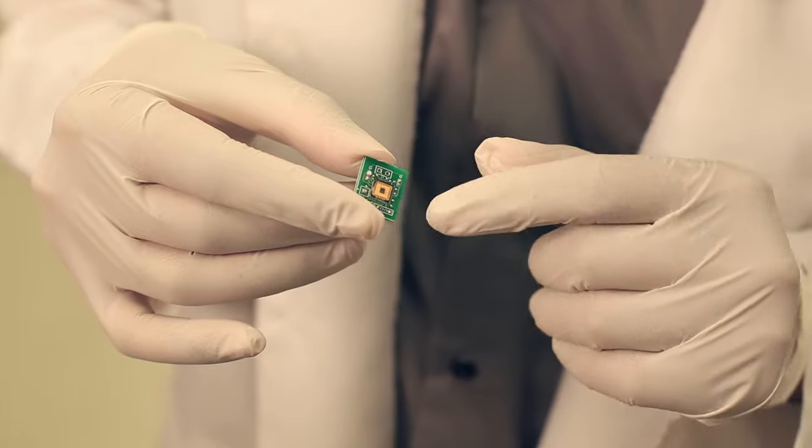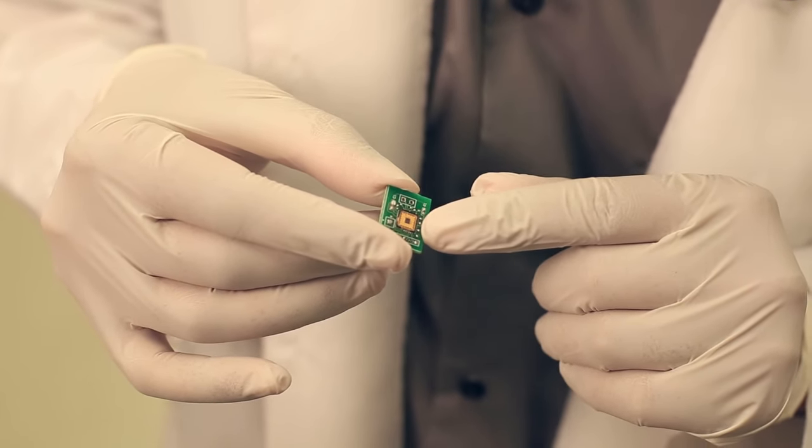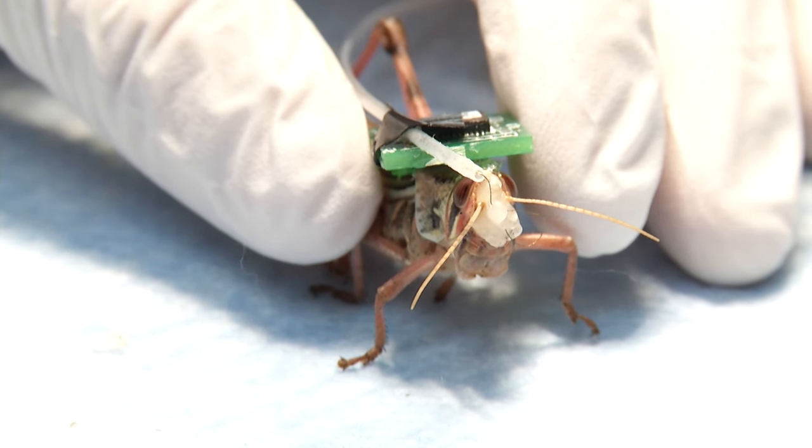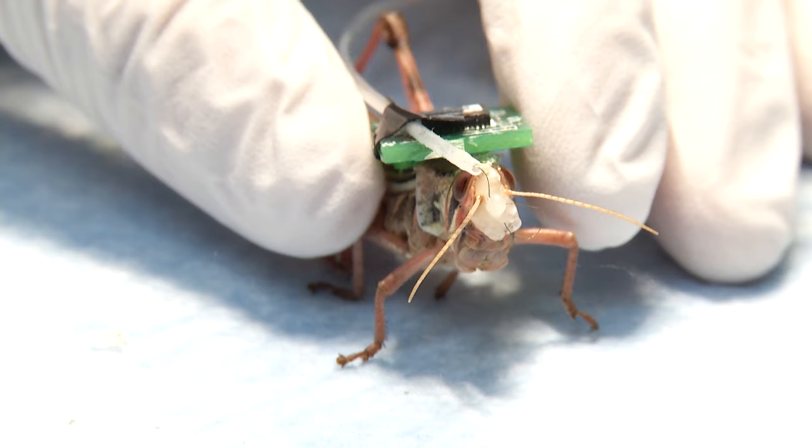What we're doing is shrinking that entire instrumentation system onto this tiny chip. The chip is going to be implanted close to the thorax of the locust, and then there will be an electrode that will go from this chip into the brain of the locust. From there, we will record the neural activity.